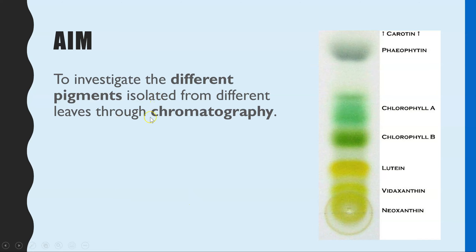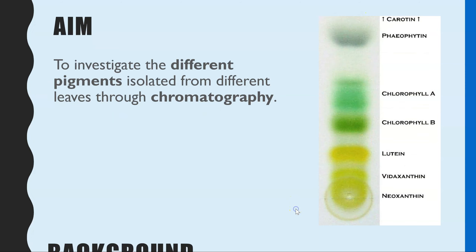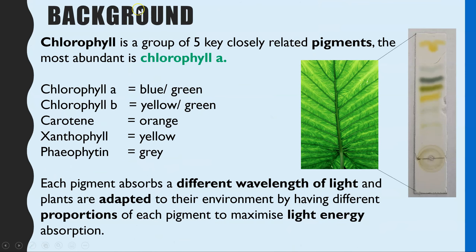The aim is to look at the technique of chromatography as a way to investigate the different pigments that you find in different species of leaves. I've just got an example here of a chromatogram that is complete, where you can see all of these different colored pigments. So although the leaf might only look one particular shade of green, it's actually made up of a combination of different pigments.